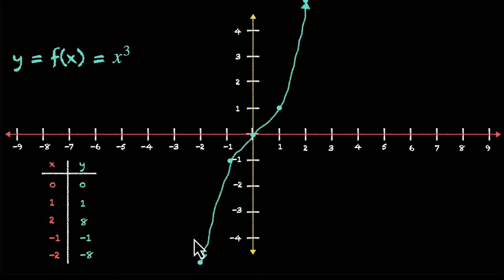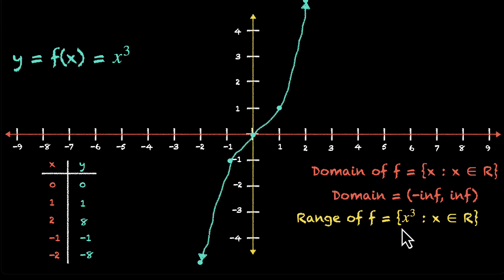It comes from minus infinity, crosses 0, and then goes towards infinity. The domain is all values of x that it can take, which is all real numbers. So the domain is x belongs to R. The domain is from minus infinity to infinity. What about its range? Well, the range is also from minus infinity to infinity. It's taking all real values. So the range is x cube where x belongs to R. And if you write the interval notation, this is what we get. Range is minus infinity to infinity.